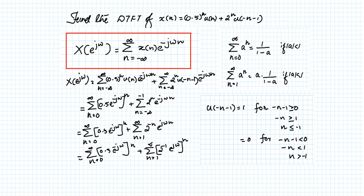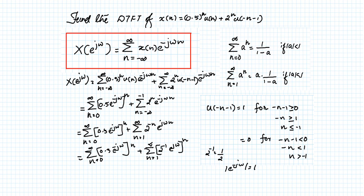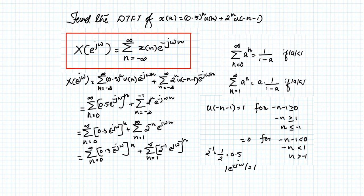Now we apply the summation formulas. For the first term, a = 0.5·e^(-jω). We can apply the formula only when |a| < 1. Since |e^(-jω)| = 1, we have |0.5·e^(-jω)| = 0.5 < 1, so the condition holds. For the second term, 2^(-1) = 0.5, so a = 0.5·e^(jω), and since |e^(jω)| = 1, this modulus is also 0.5 < 1. Both formulas can be applied.